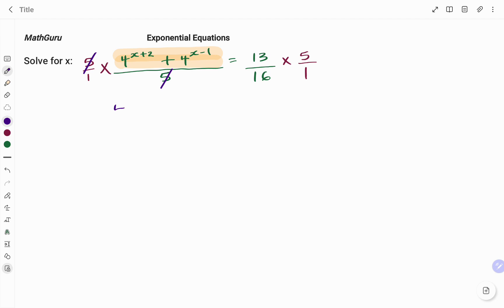So I'm left with 4 to the power of x plus 2 plus 4 to the power of x minus 1 equals, multiplying the fraction on the right, 13 times 5, 65 over 16 times 1, 16.